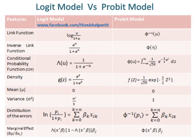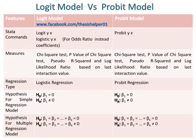Distribution of the errors and marginal effects of the Logit Model and Probit Model are given for comparison. Static commands of Logit Model and Probit Model are also given for comparison. The measures of Logit Model and Probit Model are the same, such as the chi-square test, p-value of chi-square test, pseudo-R-square test, and log likelihood ratio based on last interaction value.